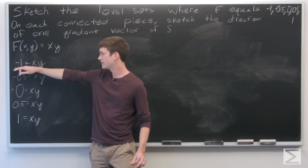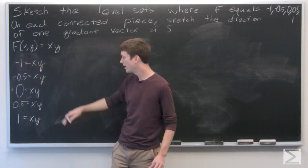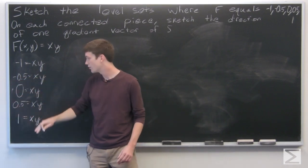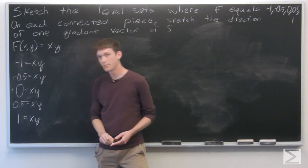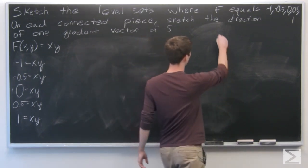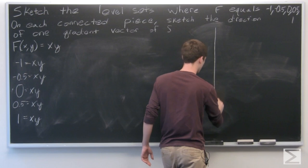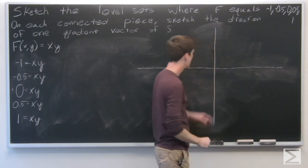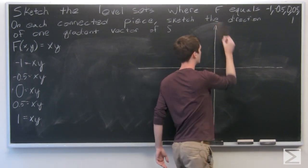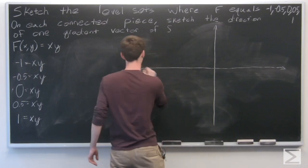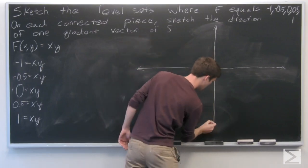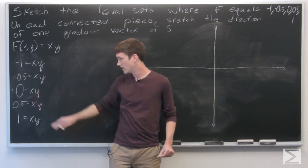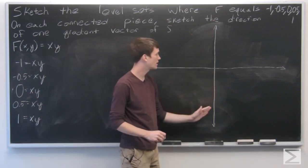We want to graph the level sets: negative 1 equals xy, xy equals negative 0.5, 0, 0.5, and 1. We'll graph these curves quickly. First, we can see that the asymptotes of all of these equations are going to be when xy equals 0 — so the x and y axes.